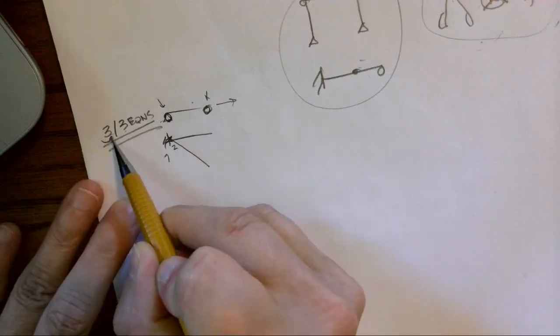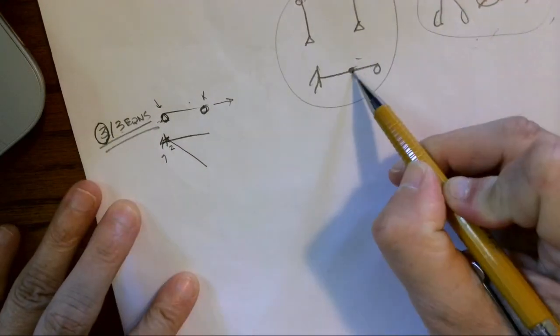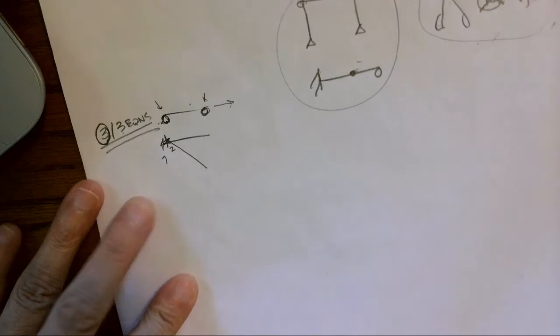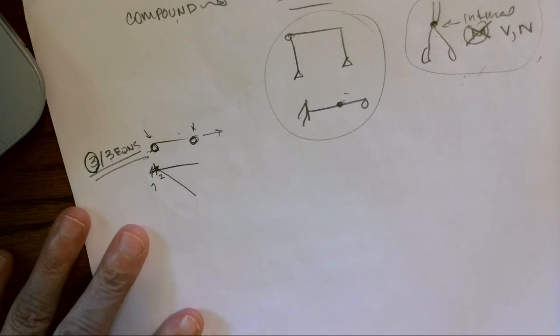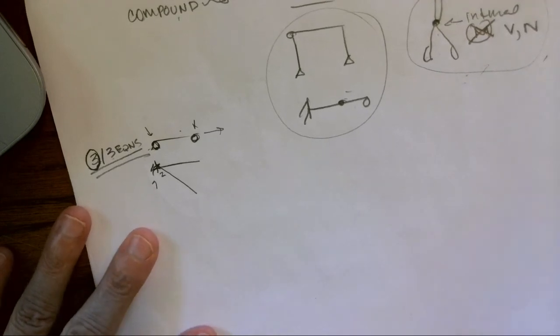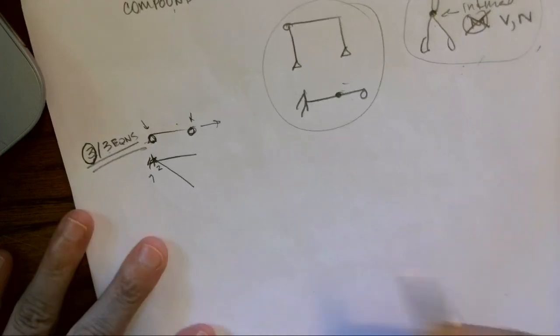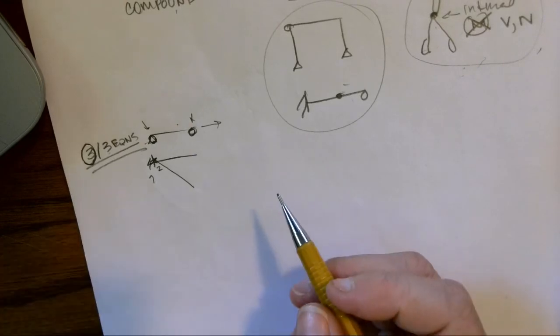We are still going to be working with systems where even though we have more than four unknowns, we will have these internal pins that let us take the system apart and create additional free body diagrams so that we can have a solution.